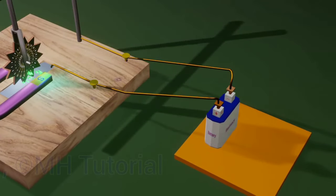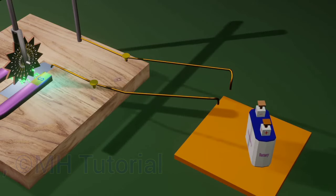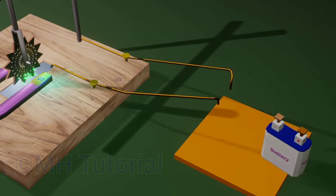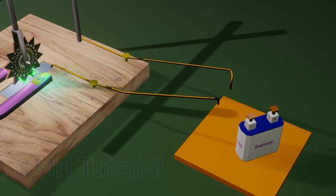Interchanging of the electric pole should change the direction of the electric current. Just move and rotate the battery and reconnect the wires.